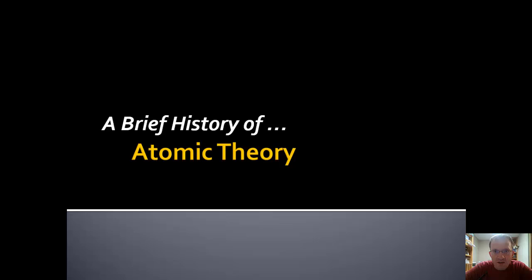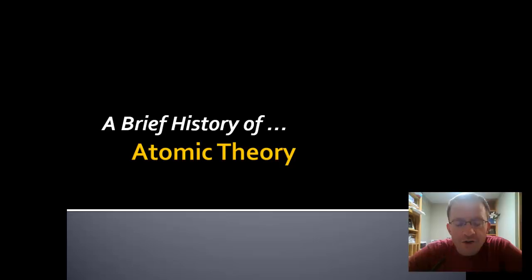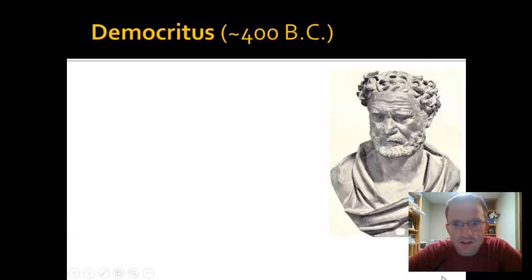Our first look is going to be at how atoms came to be understood the way they are today, some of the different people that have helped us get there, and the advances made through hundreds and even thousands of years to reach our current 21st century understanding of atomic theory. Our first character is Democritus.